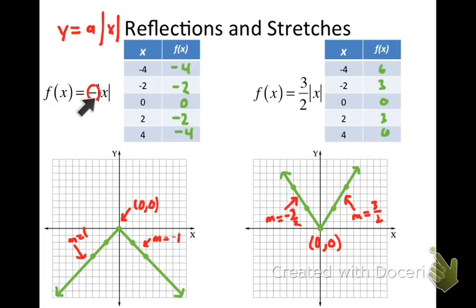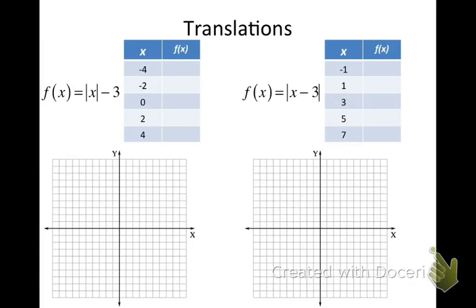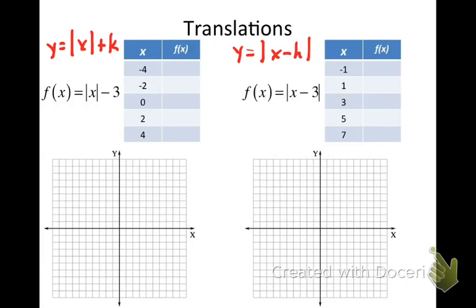Let's see what it looks like when you change other values in the equation — these changes result in translations instead of reflections or stretches. I've rewritten the parent function in two ways: y equals the absolute value of x plus k, and y equals the absolute value of x minus h. The value of k is negative 3, because you'd have to add negative 3 to get a minus 3 there.